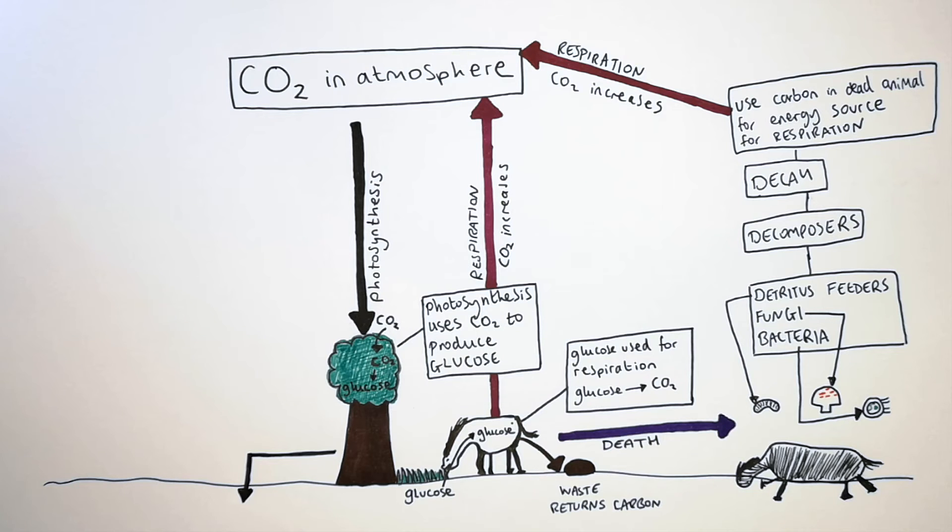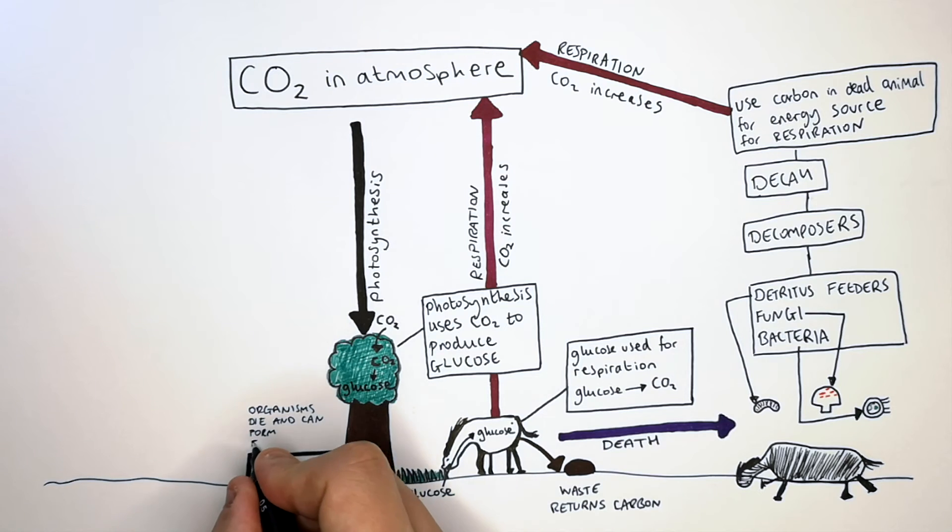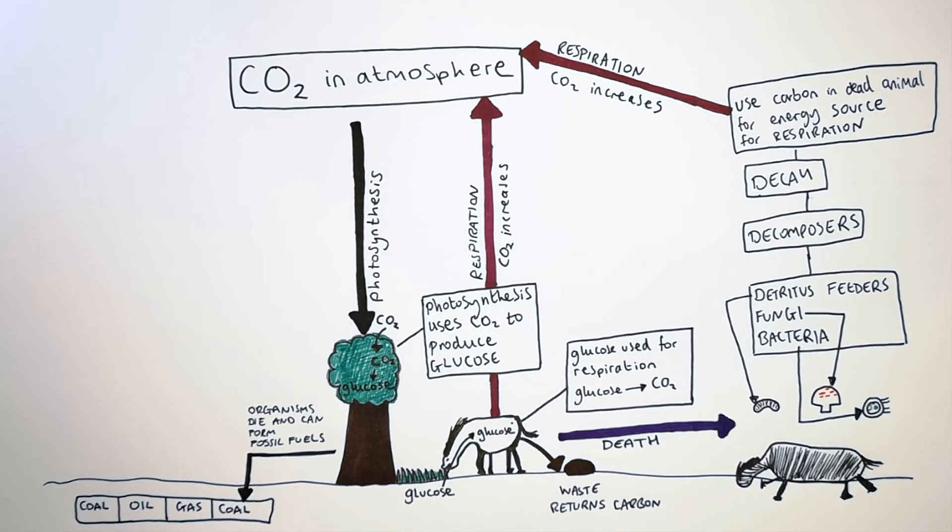If organisms die and are preserved instead of decaying by decomposers, organisms can die and form fossil fuels underground, such as coal, oil and gas.